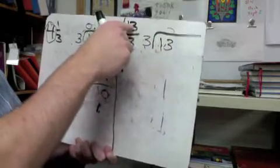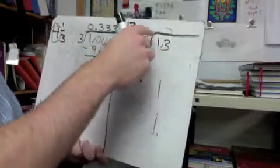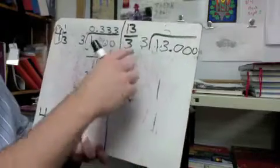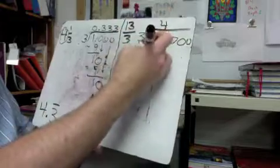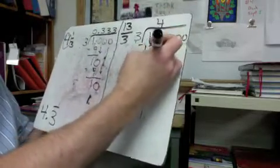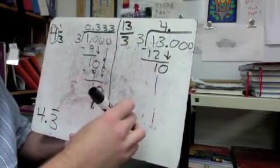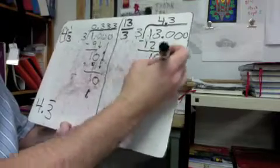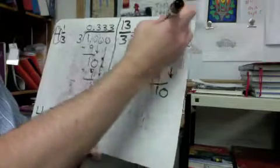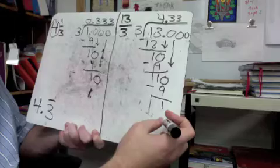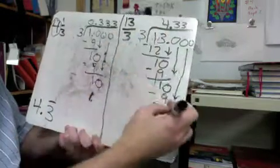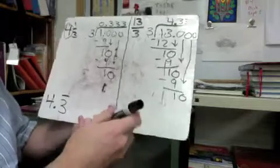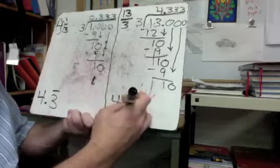This should give a whole number since thirteen is bigger than three. Three goes into thirteen — I put decimal zeros because we'll need them. Three goes into thirteen four times; four times three is twelve, take away equals one, bring down zero. Put the decimal point right after the four. Three goes into ten three times; three times three is nine, take away equals one, bring down zero. Three goes into ten three times again — we see our pattern, so the answer is 4.3 repeating, confirming both methods give the same result.